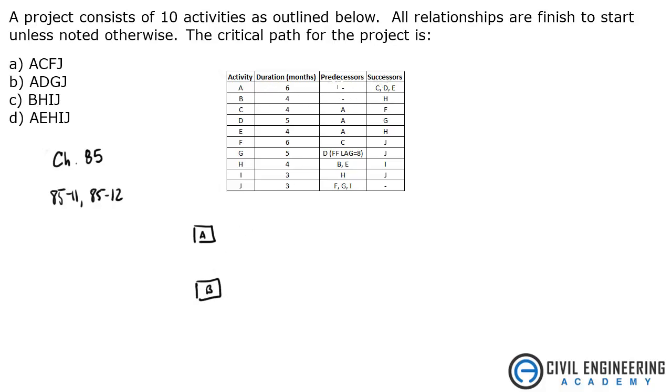Okay, its successors to A are C, D, and E. So we're going to have a C, D, E, C, D, E. To B, there's an H. I'll draw that over here.